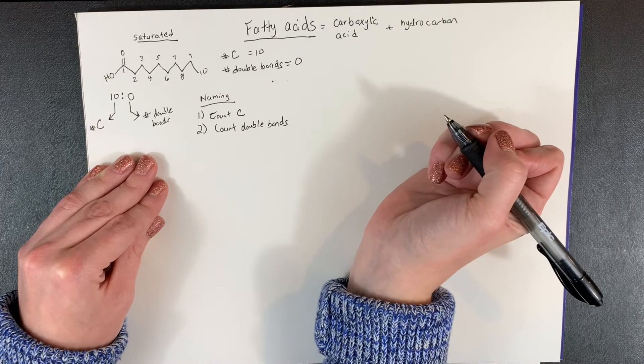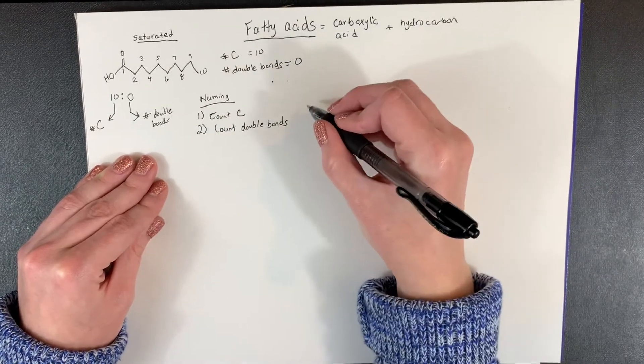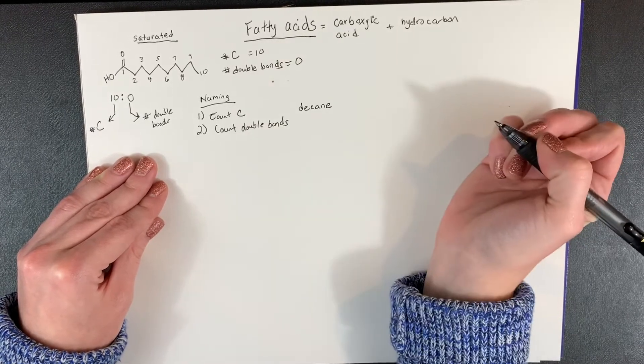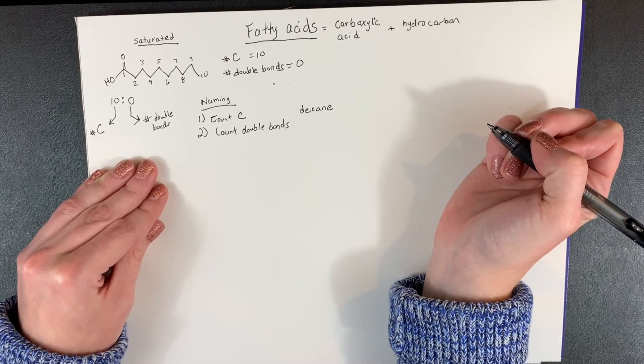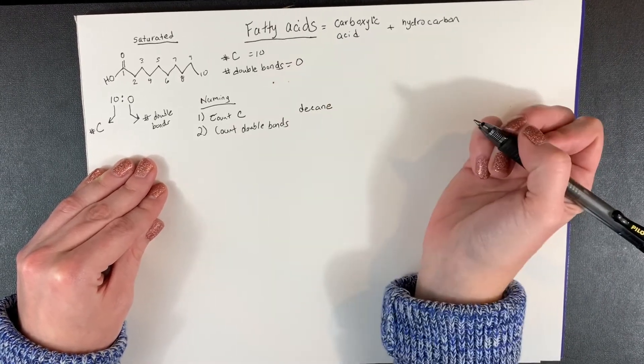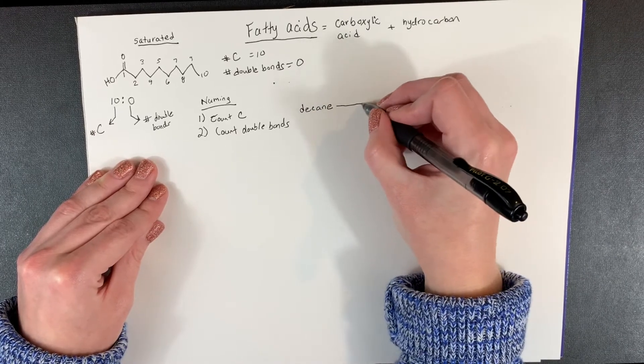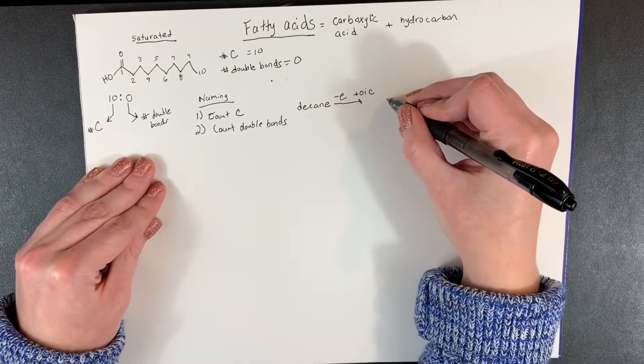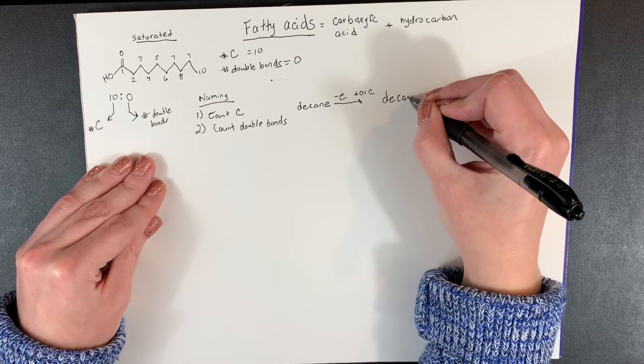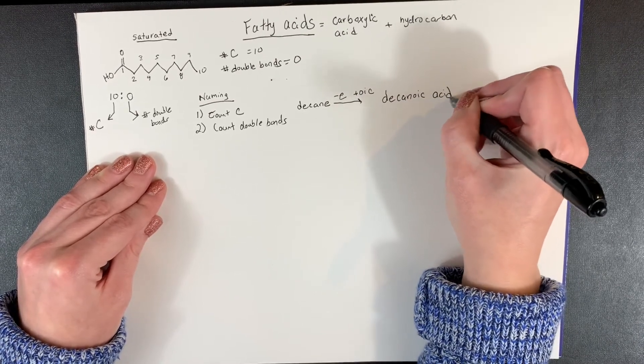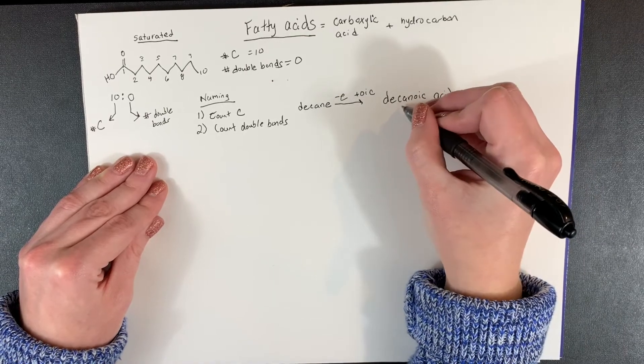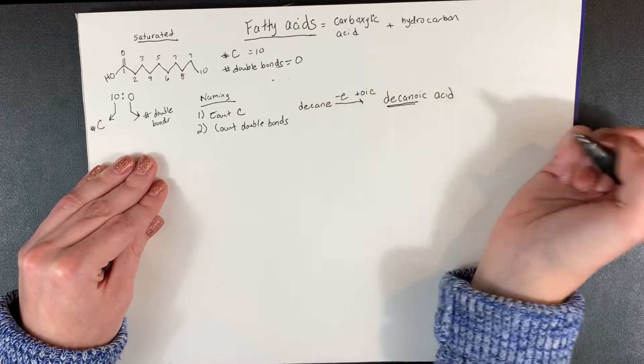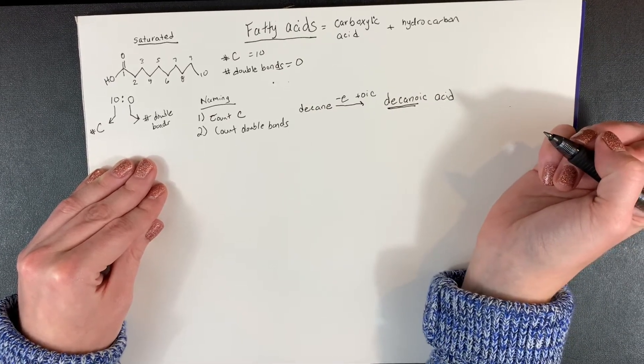Now for naming, what we do, we know there's 10 carbons. So 10 in chemistry is usually represented as decane. But this is a carboxylic acid. This is not just a hydrocarbon chain, which is what decane represents. So what you do, you have to subtract the E and add oic. So for this example, we get decanoic acid. And decanoic acid is a carboxylic acid with a hydrocarbon chain that is 10, decane, that's where we get 10. But we call it decanoic acid to show that it's a fatty acid.